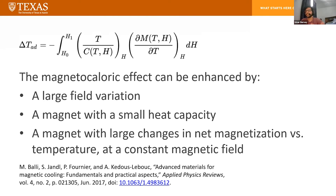It's also been observed that the magnetocaloric effect is greatest near the material's Curie temperature. That's because when the magnetic ordering coincides with the structural change affected by the field, there's an additional heat that's either released or absorbed, which strongly enhances the magnetocaloric effect. So choosing a magnet with the right Curie temperature is important depending on what temperature you're aiming for.